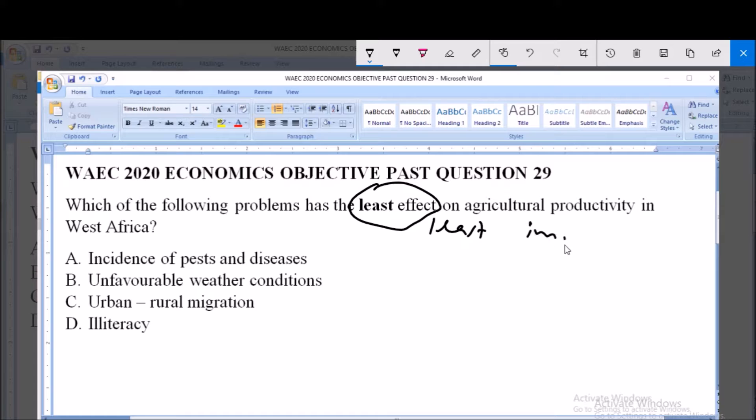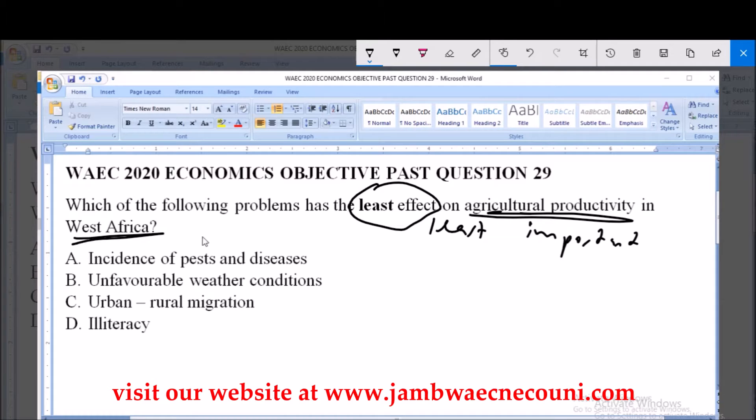So we are asked to pick out the one that has the least effect or the one that is least important or least of a problem in terms of negatively affecting agricultural productivity in the region of West Africa. Now let's analyze each of the options.